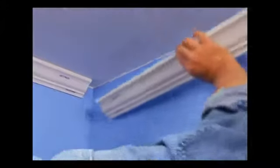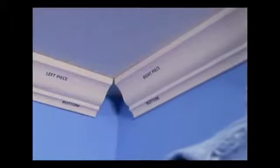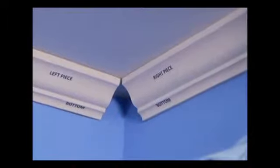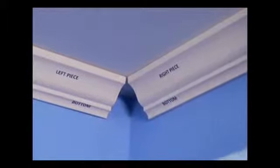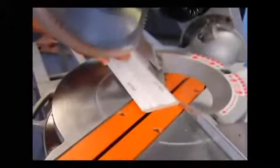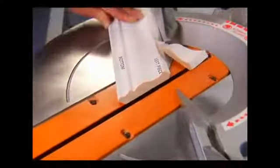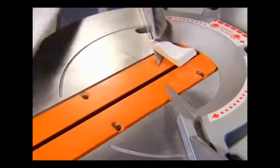When cutting crown molding, the orientation of the workpiece to the saw is critical. In this example, I've labeled the left and right hand pieces as well as the bottom edges. When cutting the left hand section of an inside corner, swing the saw arm to the right and place the workpiece to the left of the blade with the bottom edge away from the saw fence.